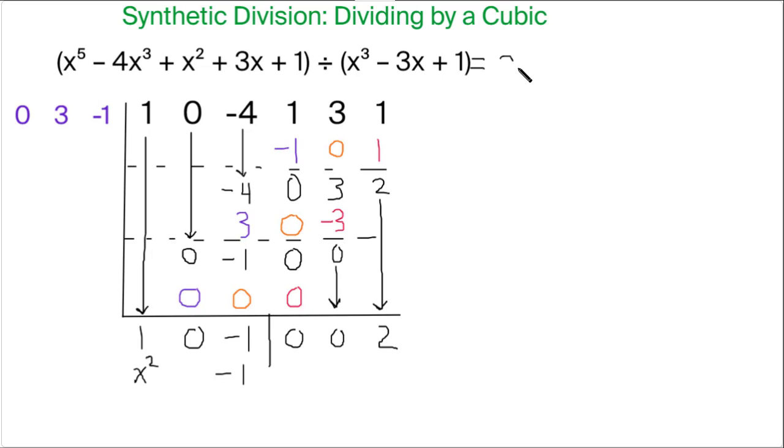So the answer is x squared minus 1, and we just use r for remainder. The remainder isn't an algebraic expression, it's just a number 2. It's 0x squared plus 0x plus 2, so the remainder is just 2.